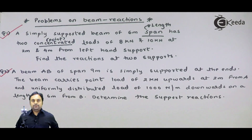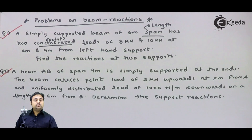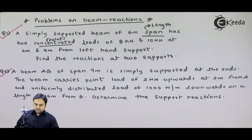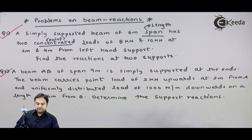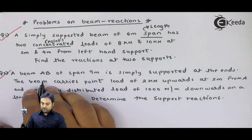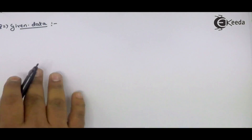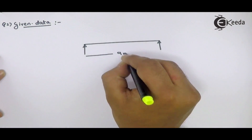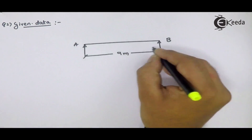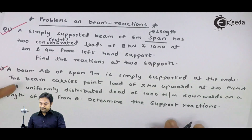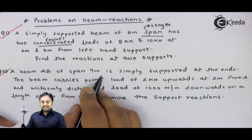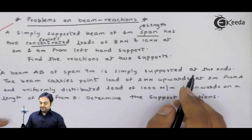As we see in this problem, the diagram is not given, but some hints are provided. With the help of that, we can draw the diagram. So let us go on to finding the solution for this. A beam AB of span 9 meters — here I have beam AB whose span is 9 meters, simply supported.